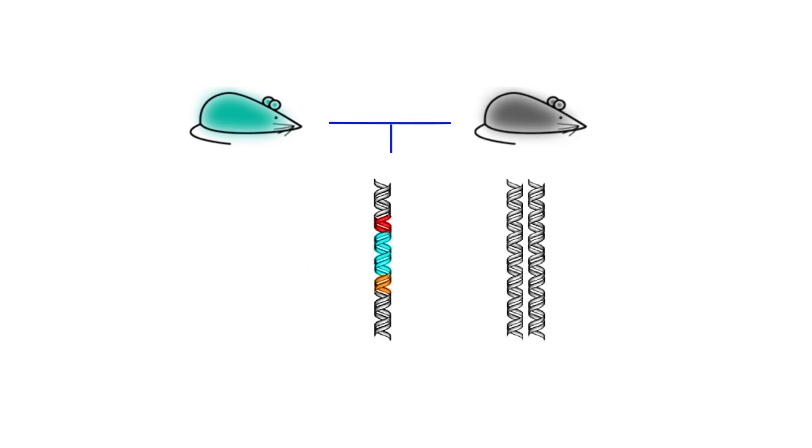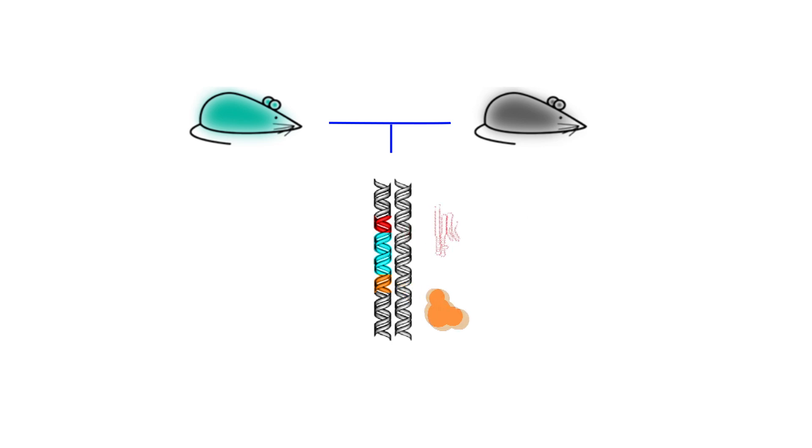When an organism carrying the gene drive mates with a wild counterpart, the offspring inherit one altered copy and one original copy of the target gene. The guide RNAs then direct Cas9 to cut the original copy, which is repaired by copying the altered gene and gene drive sequence in its place.